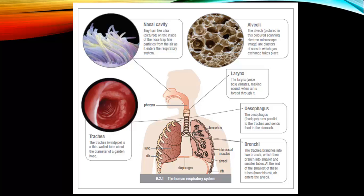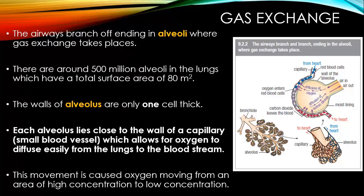There are some other organs that make up this system: the nasal cavity, the alveoli, larynx, esophagus, bronchi, and trachea. These are all really important parts of the respiratory system, but our focus today is on the lungs and the alveoli. Moist inhaled air enters via the nasal cavity, where it's filtered, warmed, and moistened.